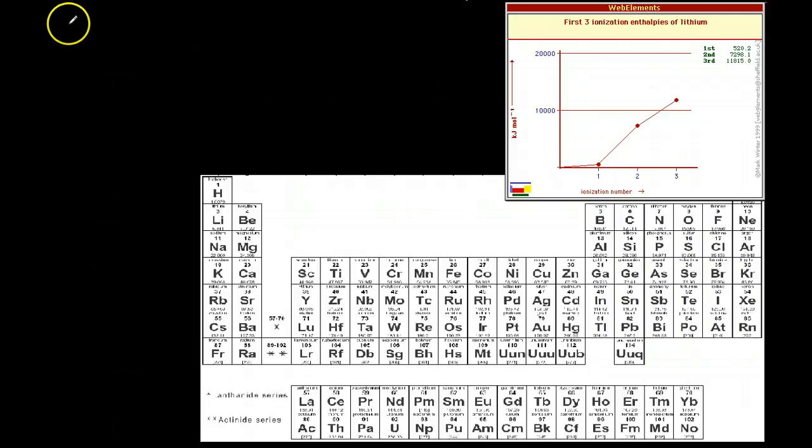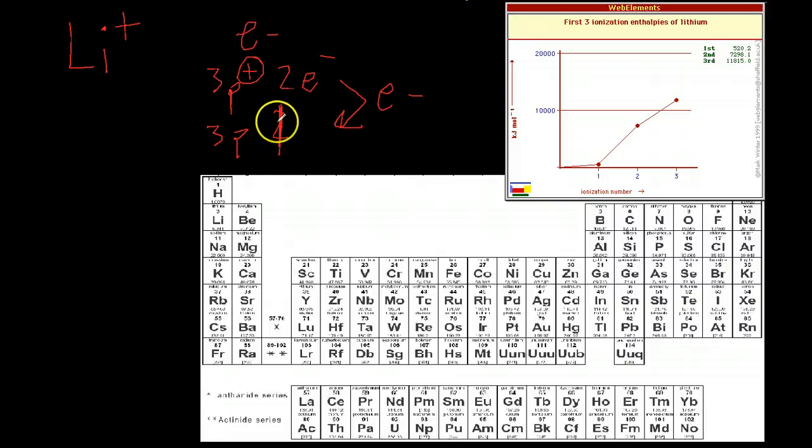Now, you can also remove electrons from ions. Let's say you had taken away one electron from lithium to make it lithium plus, which has three protons and two electrons, giving it the net positive charge. Now, what you could do is you could take away another electron, giving you three protons and one electron, and this process is called the same thing. This requires a huge amount of energy, called the ionization energy. However, it's called the second ionization energy, represented by the symbol IE2.